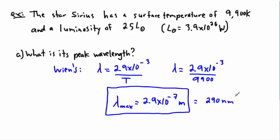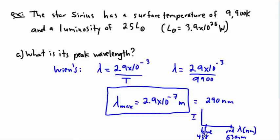If you know something about your colors — looking at intensity versus wavelength — red is around 630 nanometers, whereas blue is around 488 nanometers. This is roughly what the human eye can see. So 290 nanometers is way less than blue. That tells us the blackbody curve peaks way over in the ultraviolet, and the star will likely appear bluish or whitish.